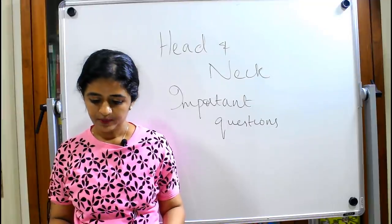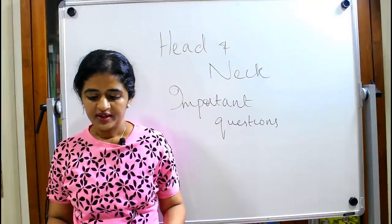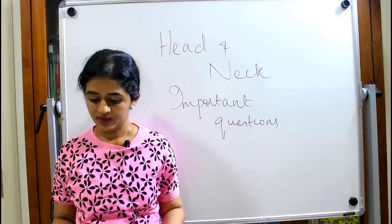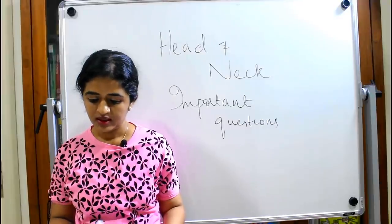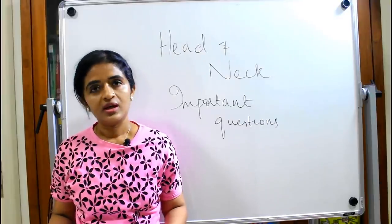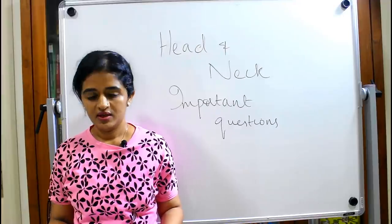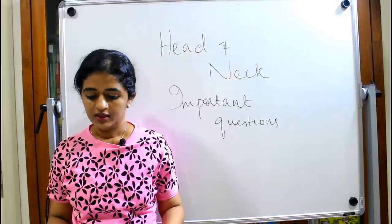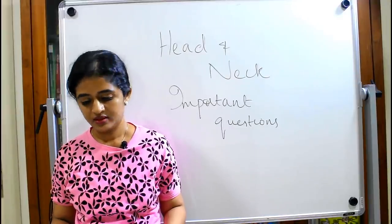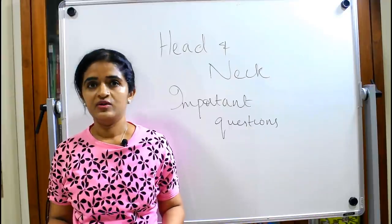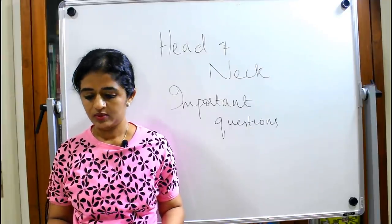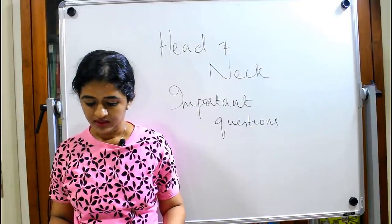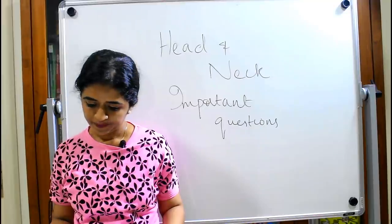Coming to the oral cavity — dental correlation is not a favorite question for MBBS undergraduates. Coming to the tongue — a very favorite question, especially the nerve supply and the different parts of the tongue, muscles of the tongue, and its lymphatic drainage. It can be asked as a structured essay. Remember to include the developmental correlation — that is very very important.